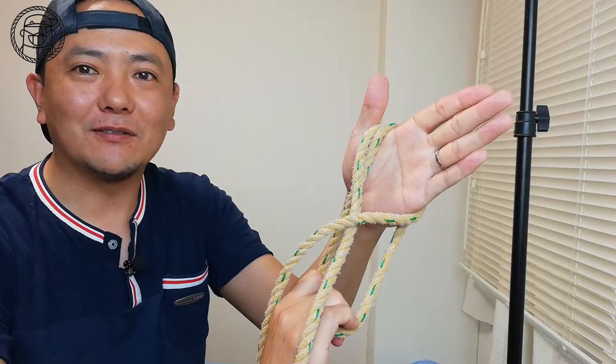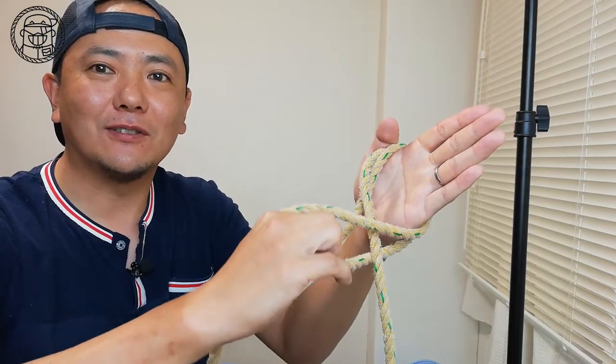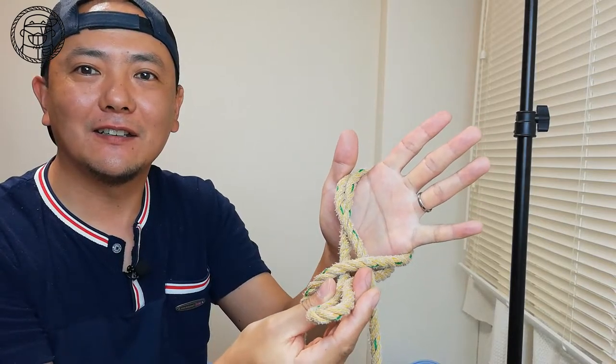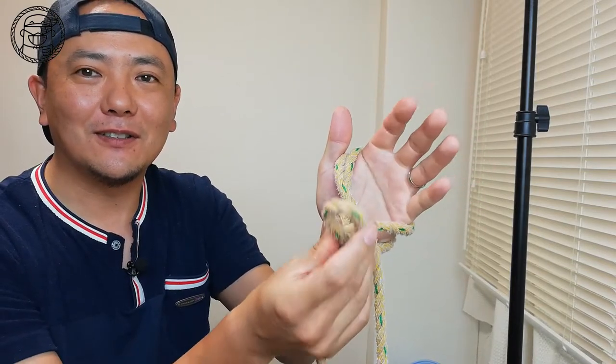Pull out the rope until it is the size you like. Then, pull it out to the front. Get it with the hand that hangs the rope.